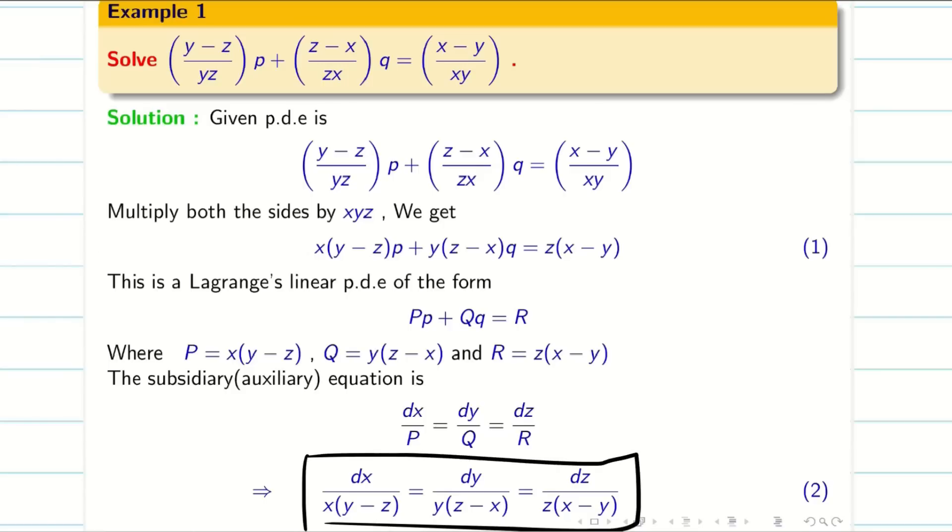What is the problem here? It cannot be grouped because the denominator involves all x, y, z with plus minus. Everything is involving x, y, z with some addition or subtraction, so it cannot be grouped. In this situation, we have to go for multipliers. Now keenly observe the denominator: x(y-z), y(z-x), z(x-y).